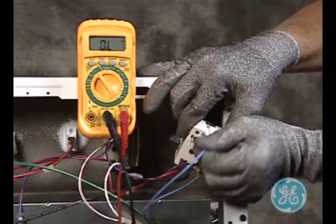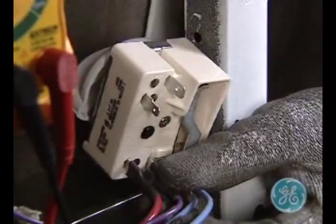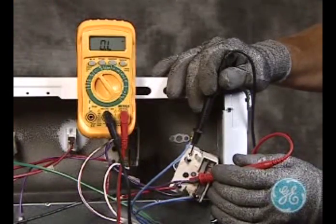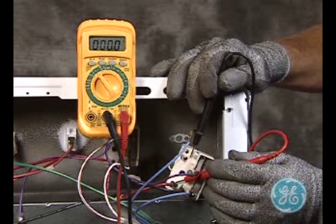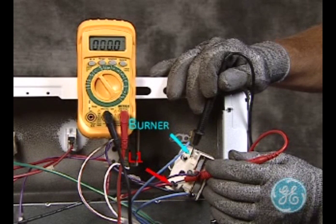To proceed to test the burner contacts, again isolate the circuit by removing one of the wires and read between contacts H1 and L1. With the switch in an on position, the meter should indicate a closed and working circuit.